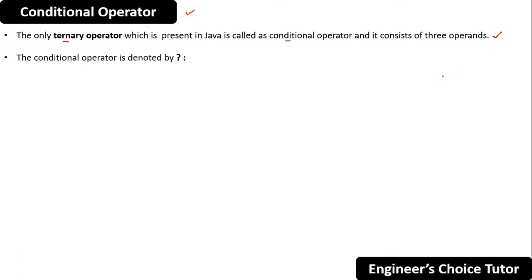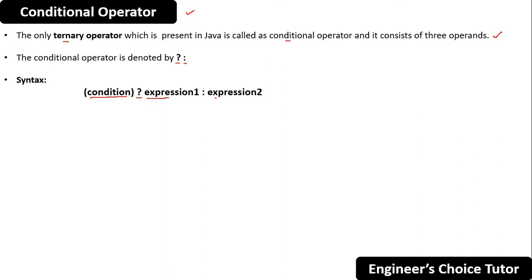The conditional operator is denoted by a question mark and then a colon. The syntax is: you pass your condition, then use the question mark, then expression 1, then colon, then expression 2. You can see three operands — condition is the first, expression 1 is the second, and expression 2 is the third. That is why conditional operators are also called ternary operators.